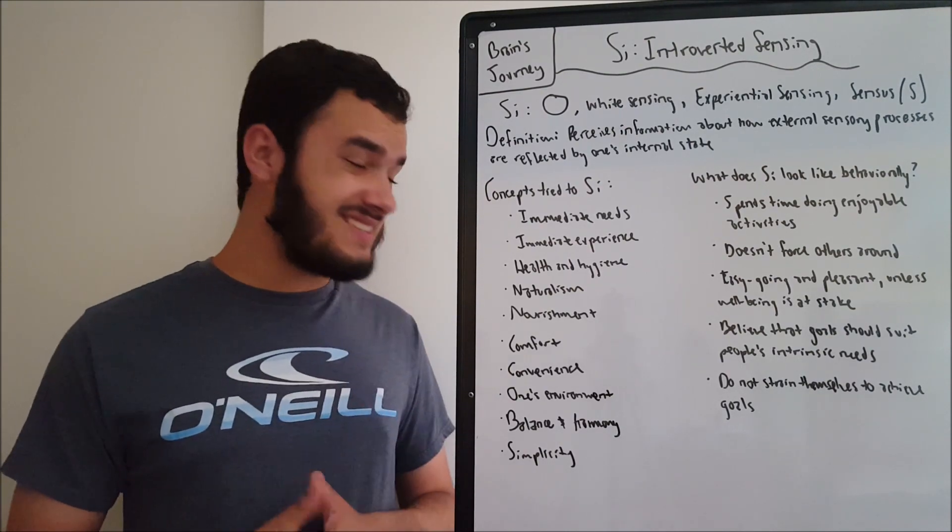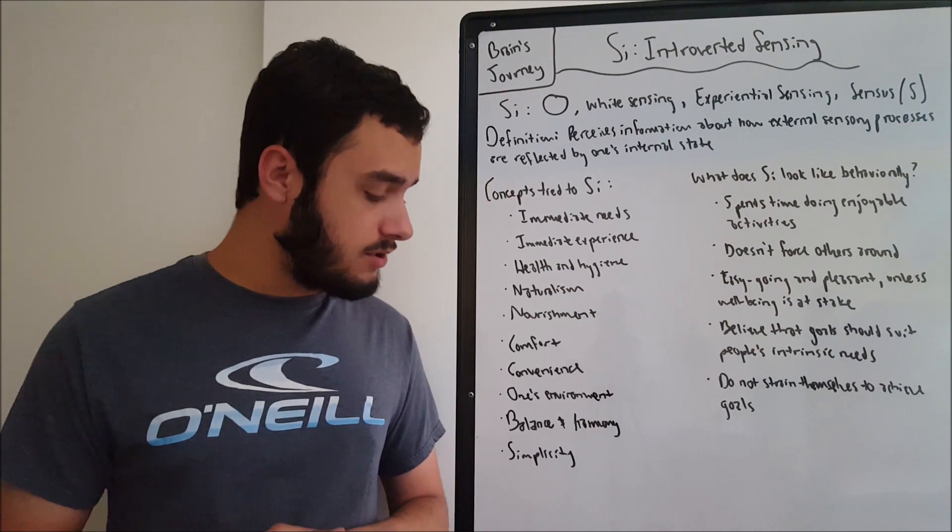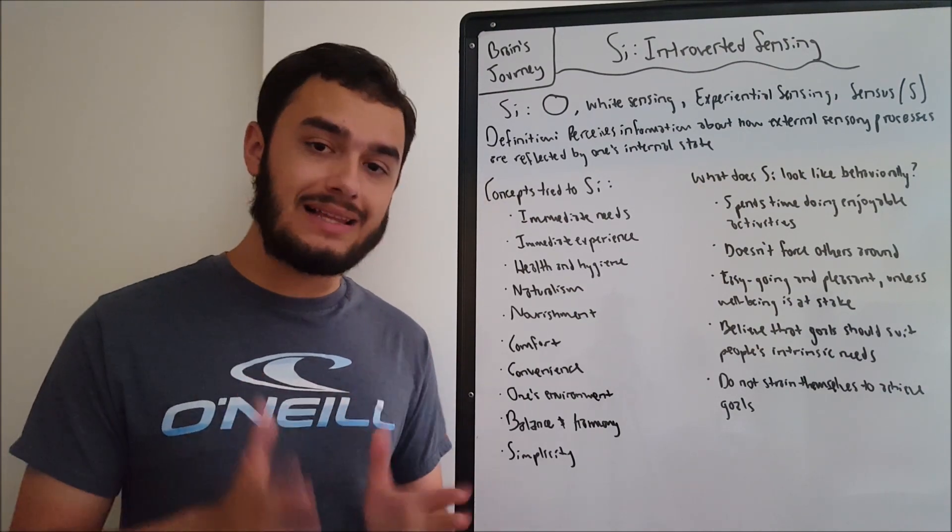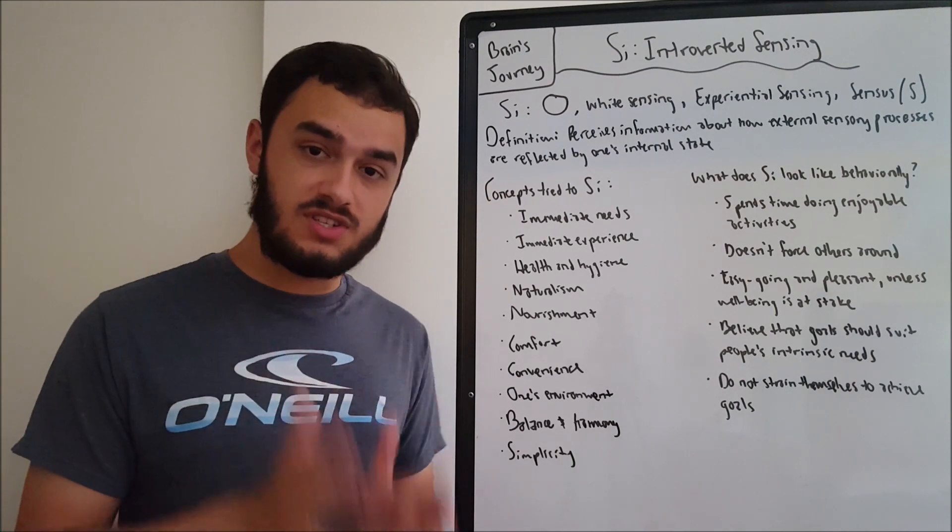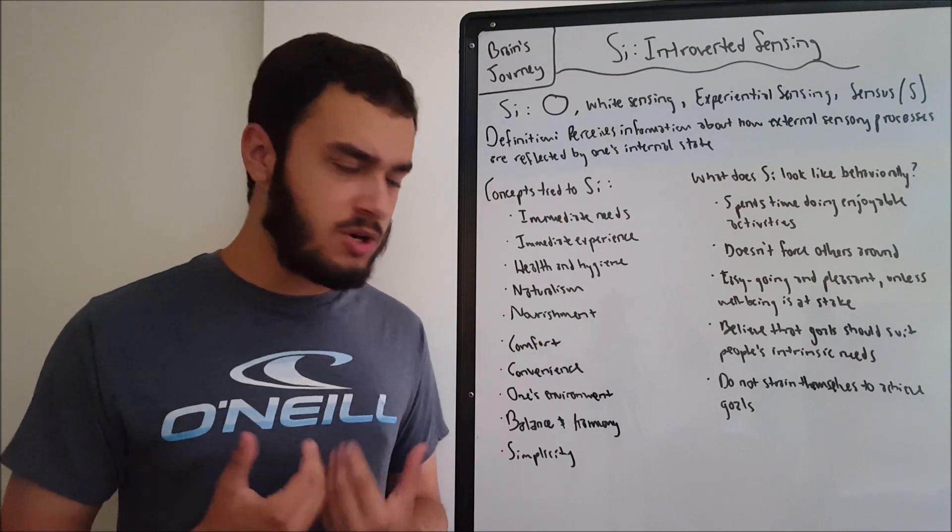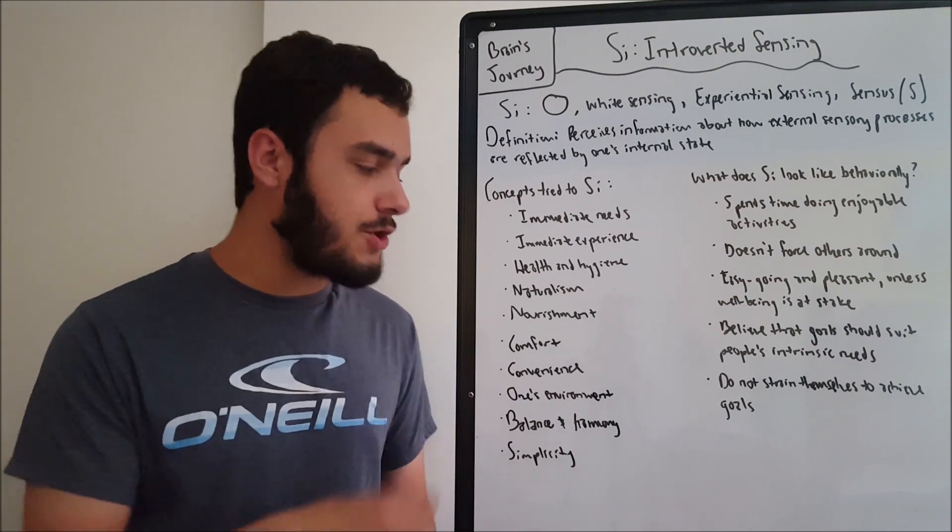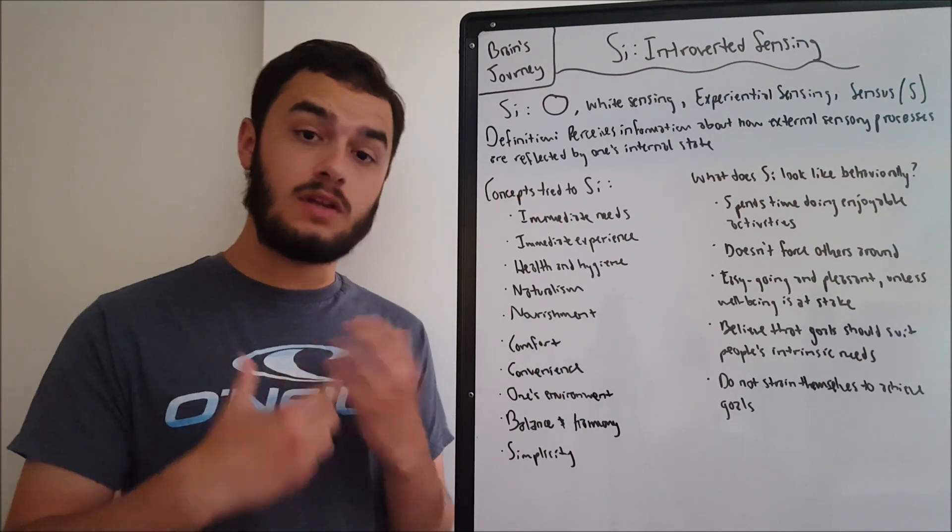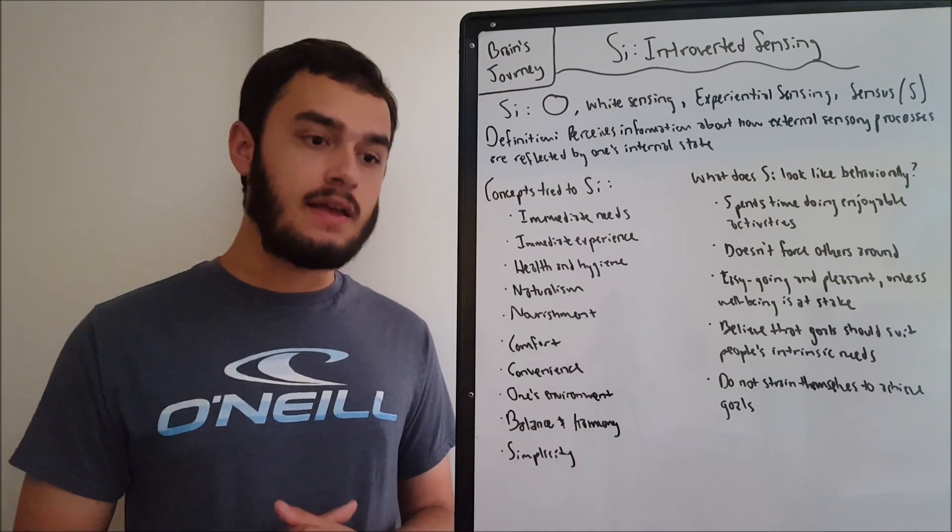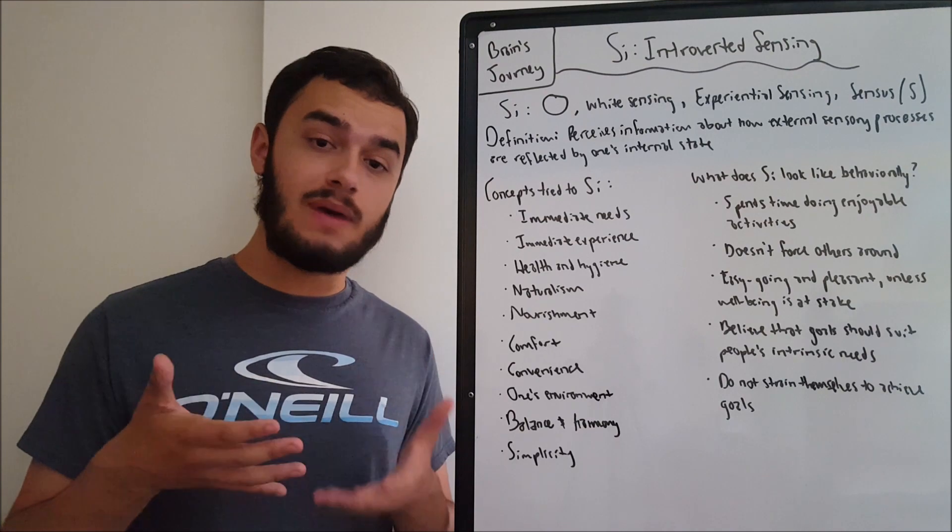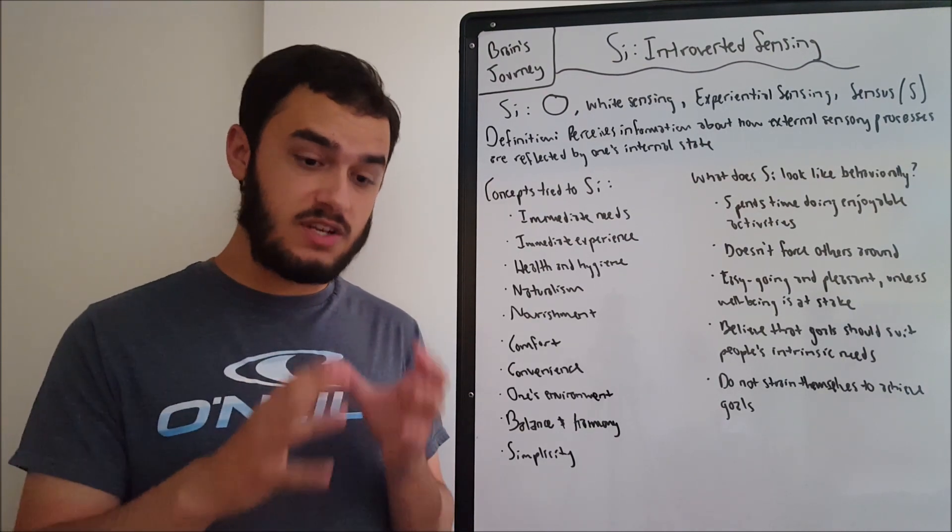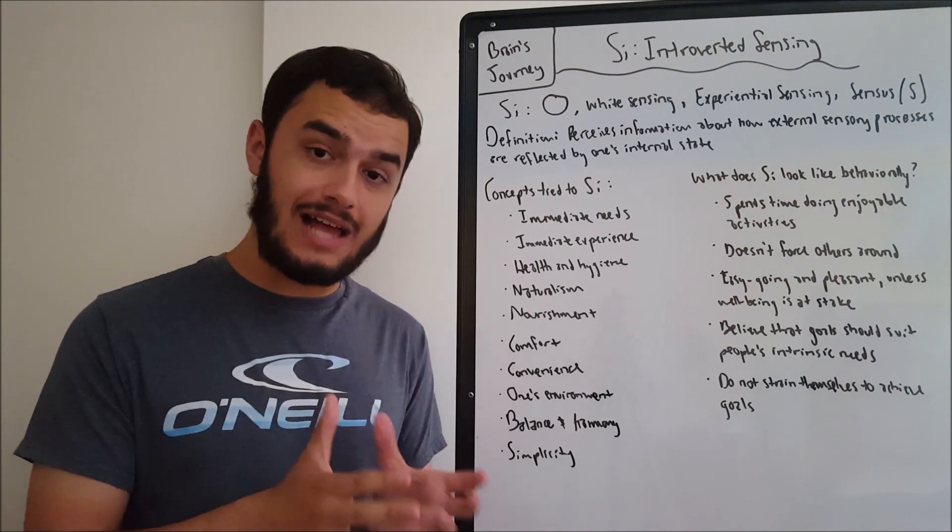Another thing that's kind of related to all these things that was sort of implied, but I thought I'd include it, is balance and harmony. SI users like to achieve balance. They like to achieve homeostasis in their natural environment. That's why we have the health and hygiene. They're keeping up their personal state. You have the nourishment and the immediate needs, solving all those survival problems. They want this harmony and this balance that comes with maintaining somebody's own internal state and all the things that are required to keep one's experience focused and relaxed.